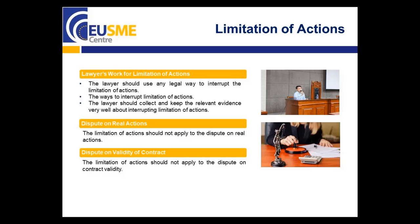Dispute on real actions: limitation of actions should not apply to disputes on real actions. For example, if Party A and Party B own a house jointly, either party can claim to divide the house at any time and should not be deemed to be later than the limitation of actions. Dispute on validity of contract: limitation of actions should not apply to disputes on contract validity. If Party A and Party B have a dispute on contract validity, either party can claim to confirm the validity of the contract at any time.